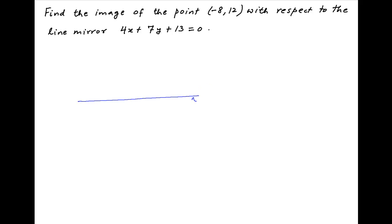We are given the equation of the line 4x + 7y + 13 = 0, which serves as a mirror for the given point (-8, 12). Let's denote this point by P. The mirror image of point P will lie on the line which is perpendicular to 4x + 7y + 13 = 0. If we denote the mirror image by point P' with coordinates (alpha, beta), then the perpendicular distance of P' from the mirror will be the same as the distance of point P from the mirror.